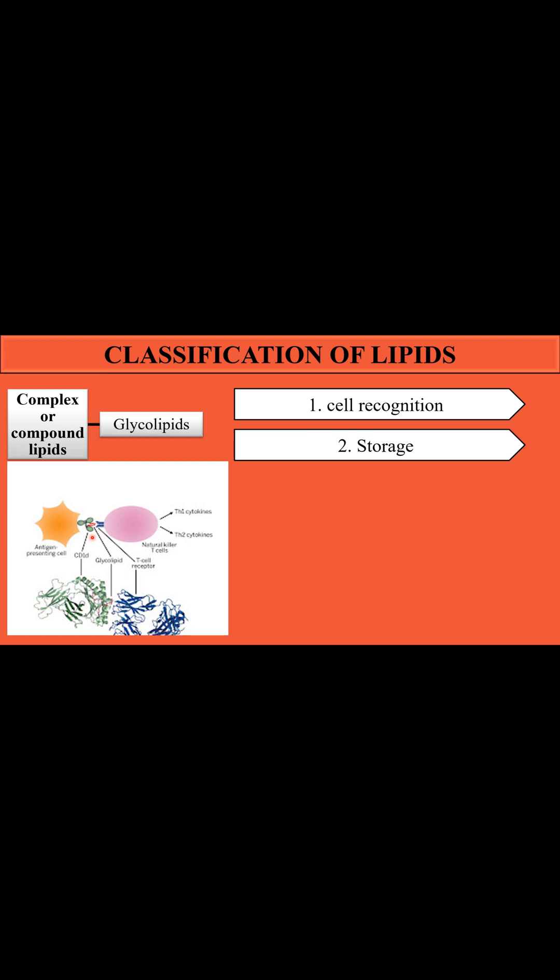Another function is storage — glycolipids are a storage form of carbohydrates combined with lipids. When carbohydrates are depleted, they can be utilized for energy. Glycolipids are also involved in signaling processes; because they are attached to the cell surface, they are used in communication with other cells.